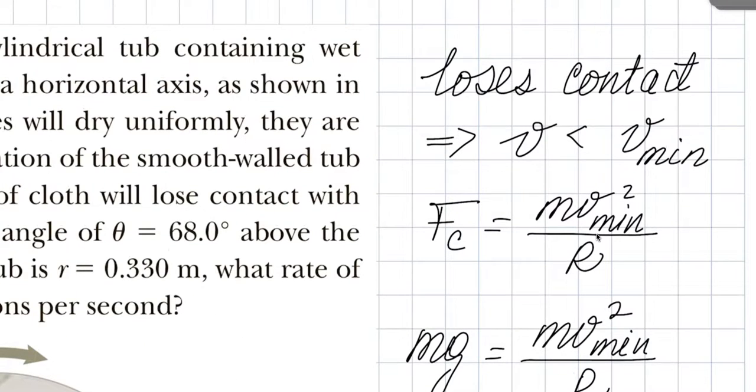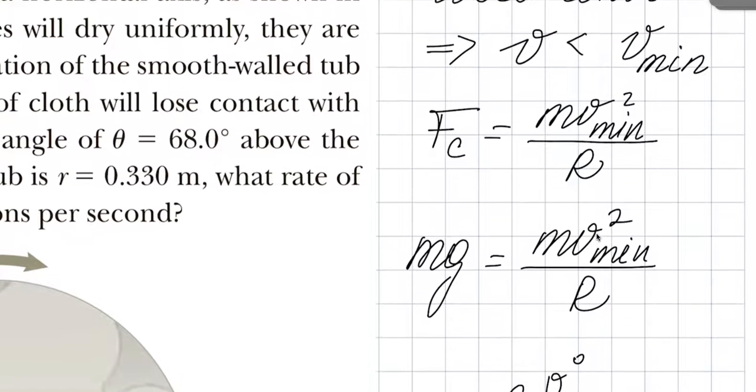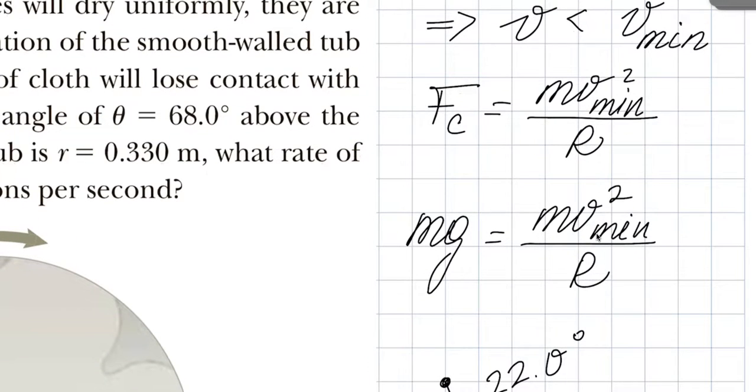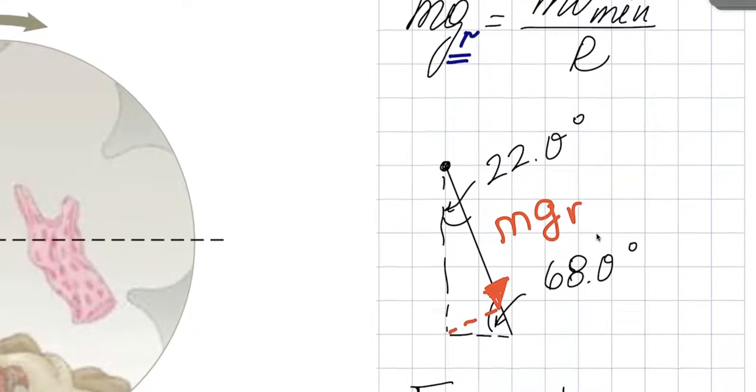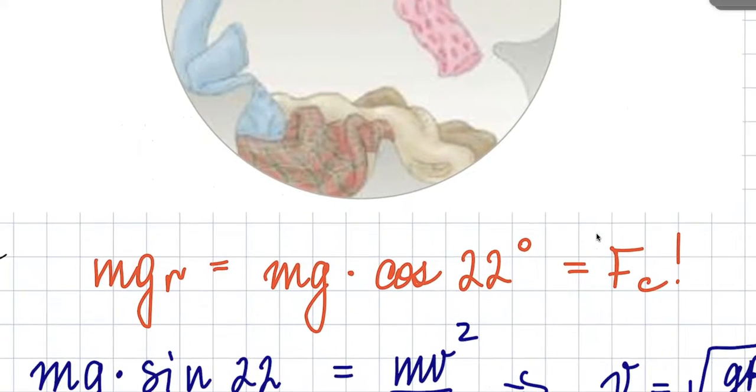So, loses contact, then we have V is less than the minimum that would be required, and then centripetal force in this case. Oh, that is wrong, right here. MGR. Important. MGR would be your centripetal force, because force of friction is not considered there.